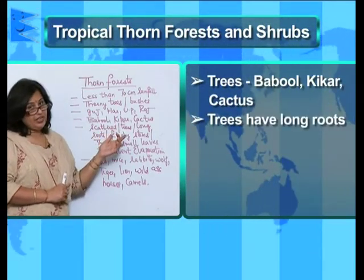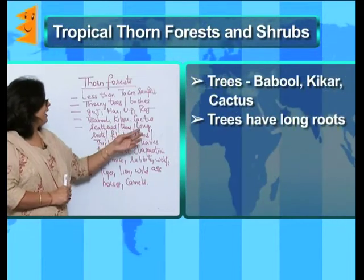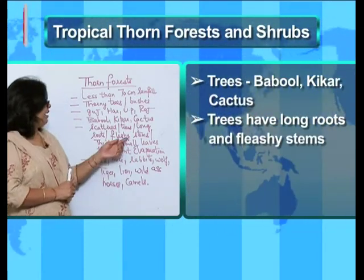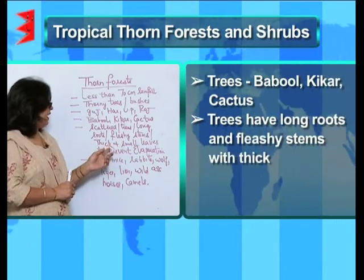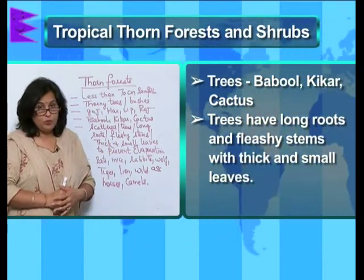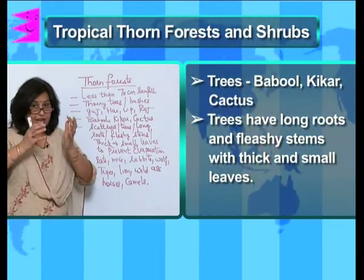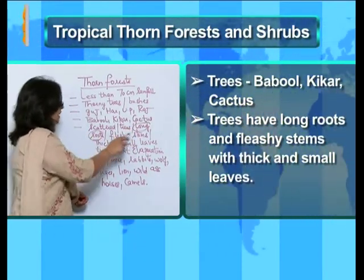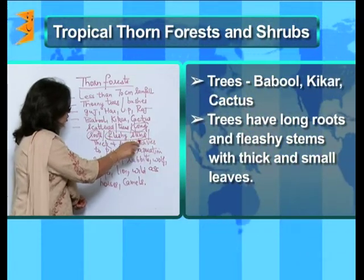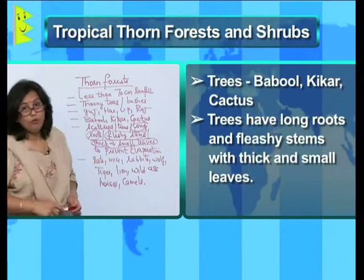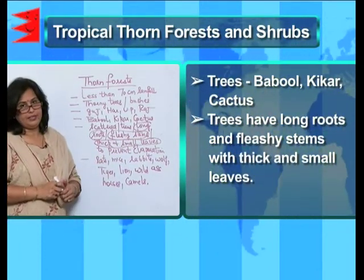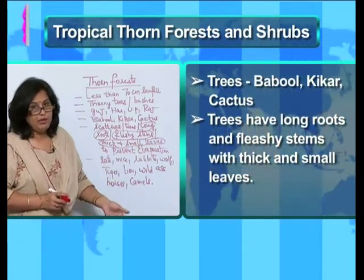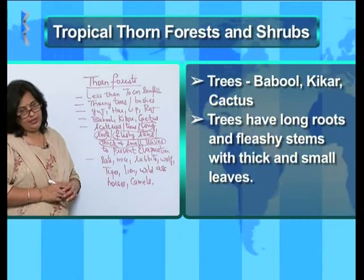The trees are very scattered. They have long roots so they can tap underground water, and they have fleshy stems and thick, small leaves which prevent evaporation. The long roots, fleshy stems, and thick small leaves are all adaptations to conserve water. So here we see that the type of vegetation found is actually being influenced by the rainfall that it receives.